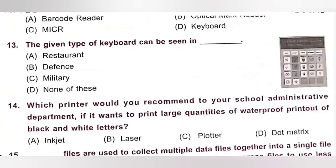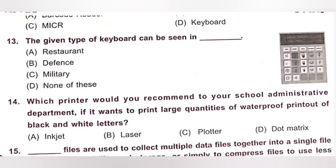The given type of keyboard can be seen in dash. A. Restaurant. B. Defense. C. Military. D. None of these. So, the given type of keyboard can be seen in a restaurant. Option A is the correct answer.